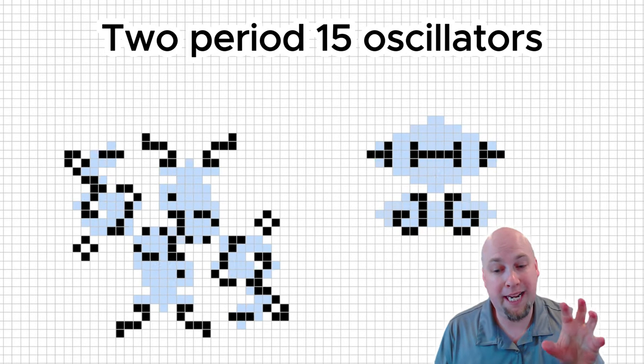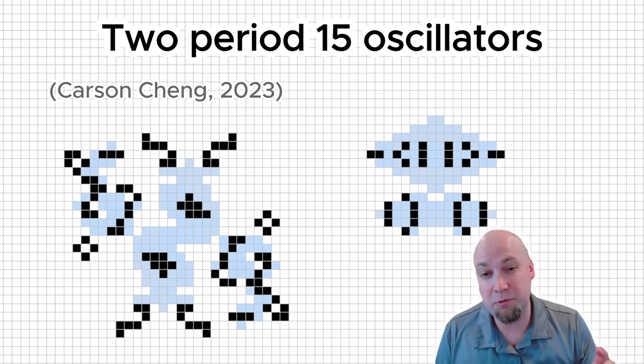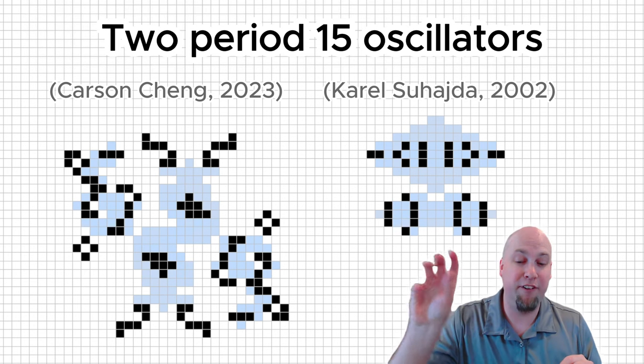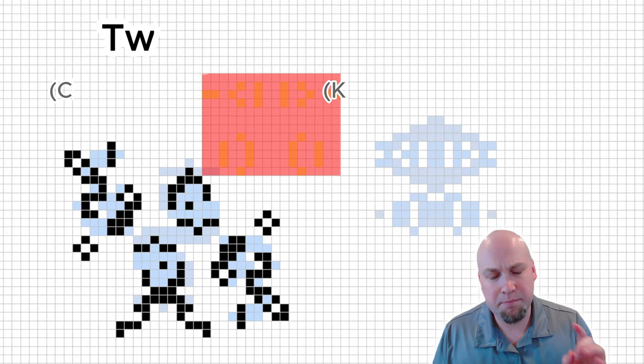This time, the B-heptomino Hassler that was used, it was period 15, of course. It was found by Carson Chang in July 2023, and they combined it with an oscillator called Karel's P-15. This oscillator, it was found by Karel Suhajda in December 2002.